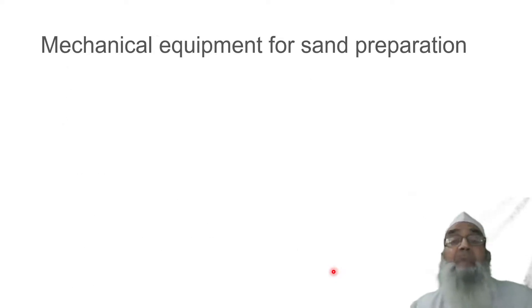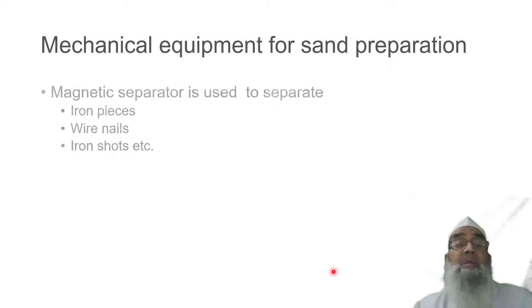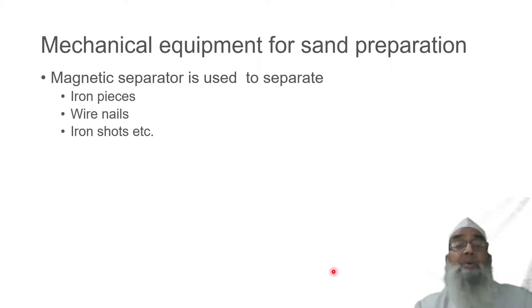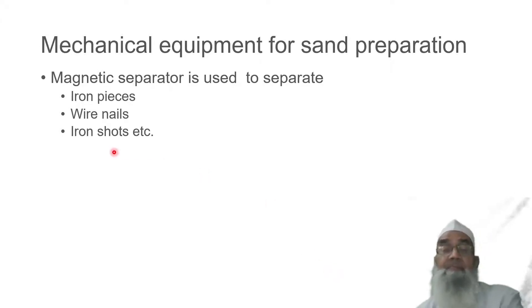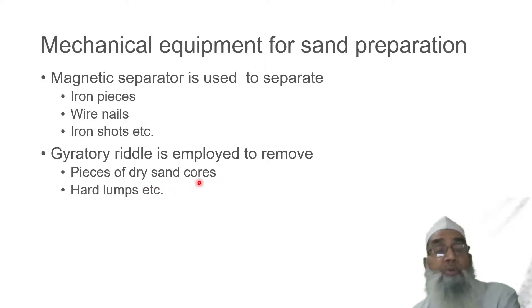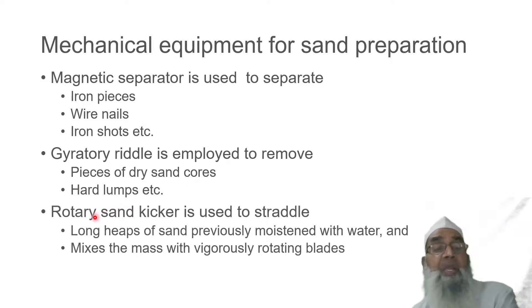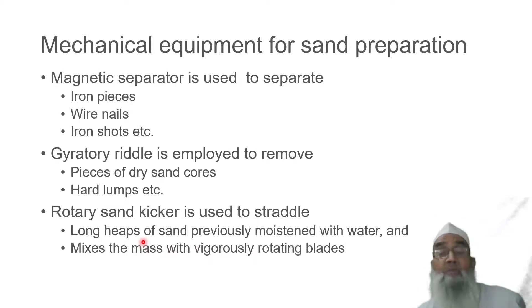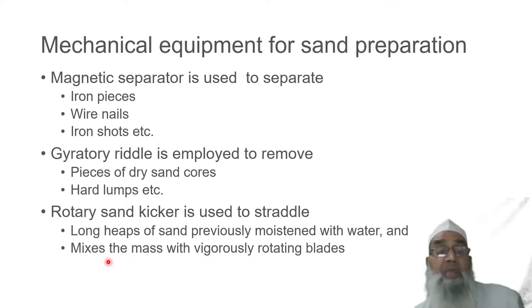For mechanical equipment for sand preparation, a magnetic separator is used to separate iron pieces, nails, iron shots, etc. Vibratory riddling is employed to remove pieces of dry sand, cores, and hand lumps. Rotary sand mixers are used to break up large heaps of sand previously moistened with water, mixing the mass with vigorously rotating blades.